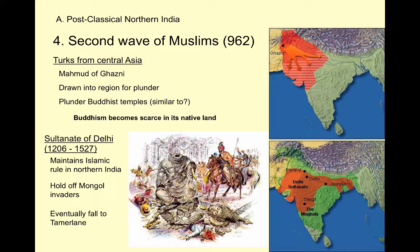Buddhism, whose homeland is India, will almost be wiped out there and will really only survive in Central Asia, Southeast Asia, and East Asia, where it had spread. This is similar to when Vikings invaded Western Europe at around the same time — they were attracted to Christian monasteries for the same reason: donated wealth and pacifist monks. Another long-term consequence of Mahmoud of Ghazni's invasion is the spread of the Turkish language into India, another example of a language spreading in period 3 due to conquest and trade.